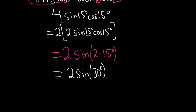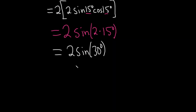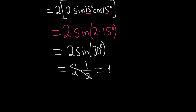Now you just have to use your memory. Hopefully you have this memorized: the sine of 30 degrees is 1/2. So this is 2 times 1/2, which equals 1.